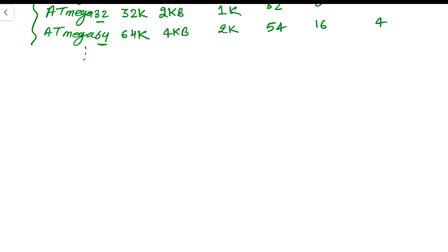Now let's look at the ATtiny series. ATtiny microcontrollers start with ATtiny followed by a four-digit number. As the name suggests, microcontrollers in this group have fewer instructions and smaller packages compared to the Mega family. You can design systems with low cost and low power consumption using ATtiny. Program memory ranges from 1K to 8KB and I/O package pins range from 8 to 28, with a very limited peripheral set.